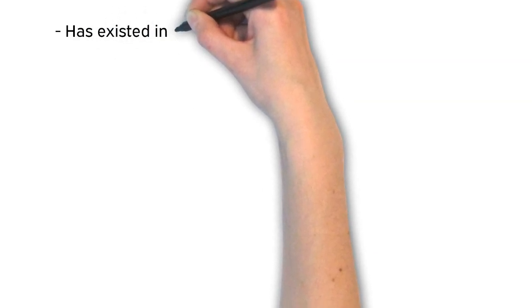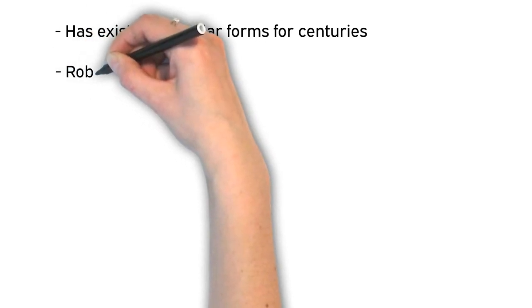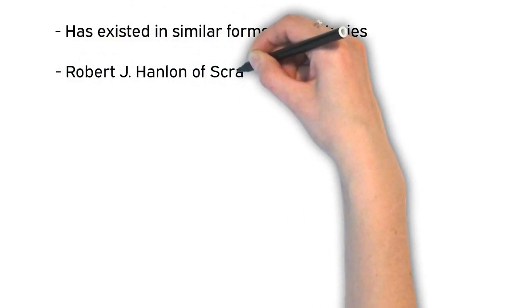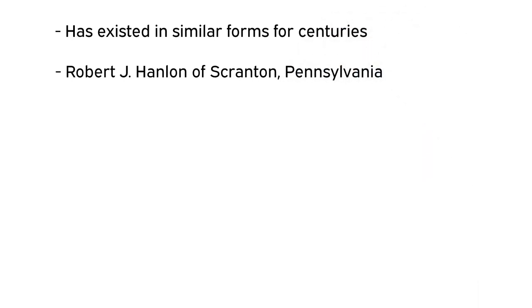Hanlon's razor has existed in similar forms for at least a few centuries. However, as it is named, it is probably attributed to Robert J. Hanlon of Scranton, Pennsylvania, as a submission to a book of jokes related to Murphy's Law that was published in 1980.